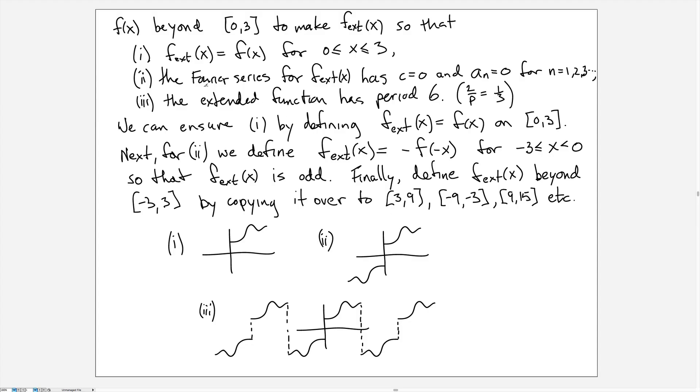So on the next page, I just give that written out in full, and that is that we want to extend the function f so that it's equal to f on 0 to 3. We also want the Fourier series for this extension to have 0 coefficients c and a_n, and we want the extended function to have period 6. So we've managed to do all of that as I described previously, and this is just another illustration of those extensions.